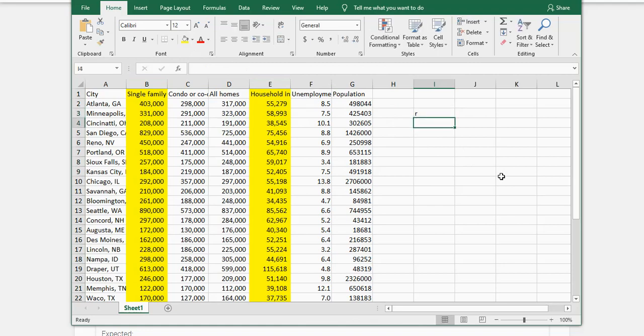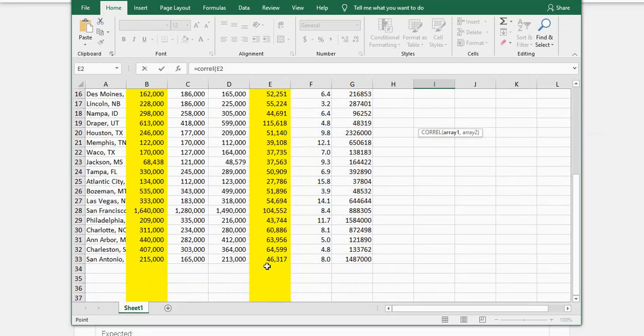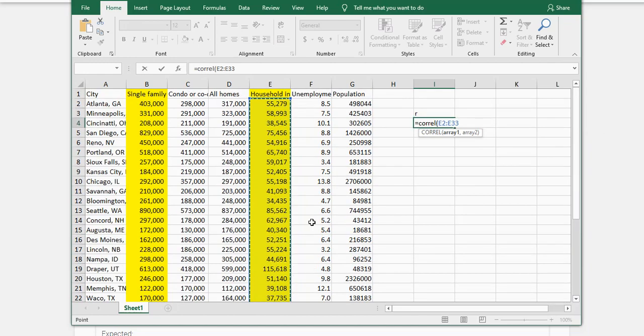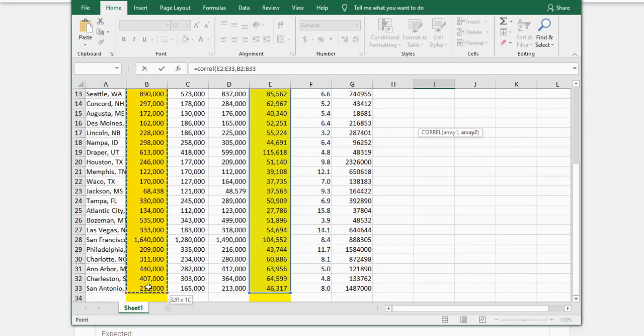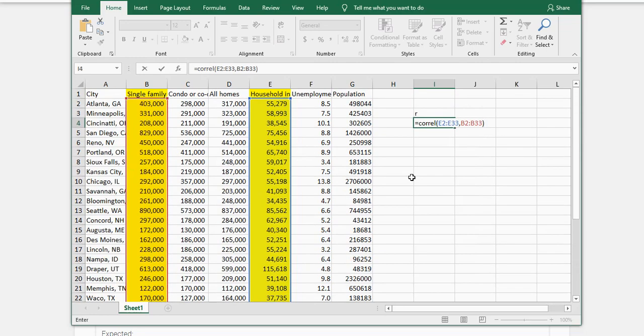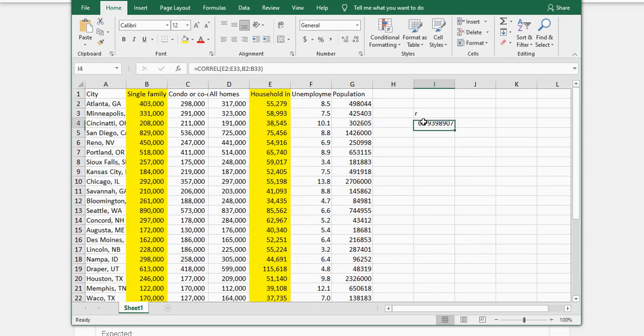you're going to use the equals COREL function. This returns the correlation coefficient. You're going to select array 1, that'll be our X variable here. Then you're going to go comma, select array 2, that'll be our Y variable. We'll close the parentheses and we should get a value right here.